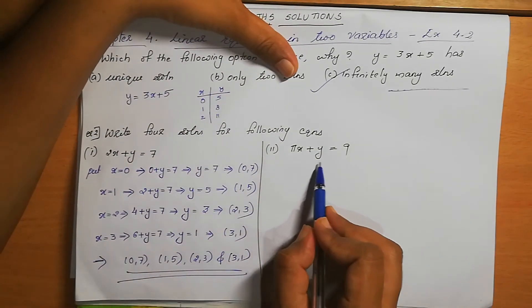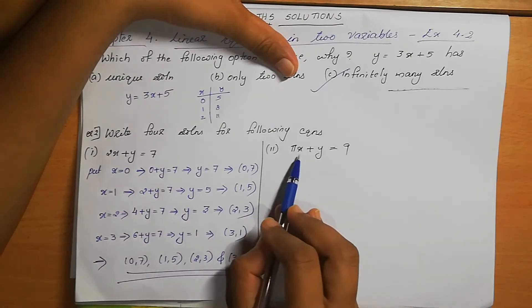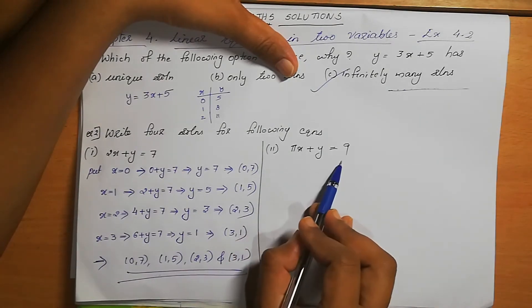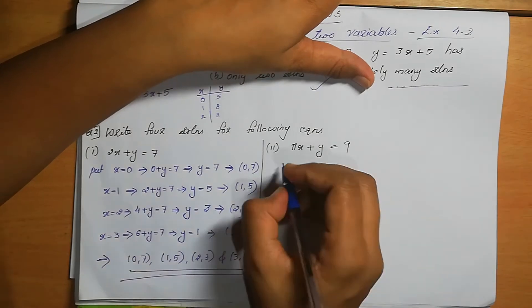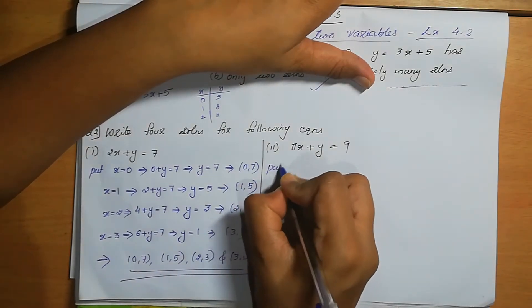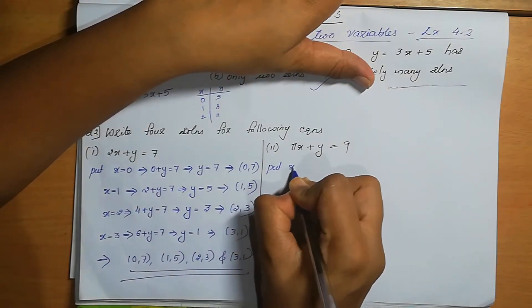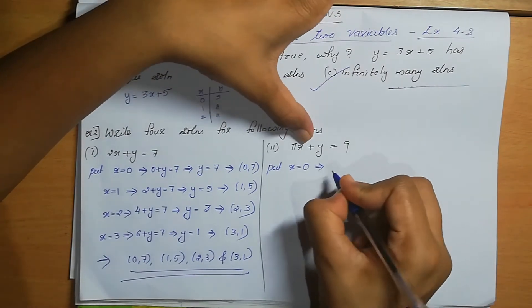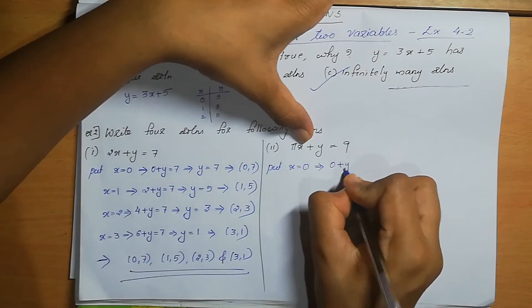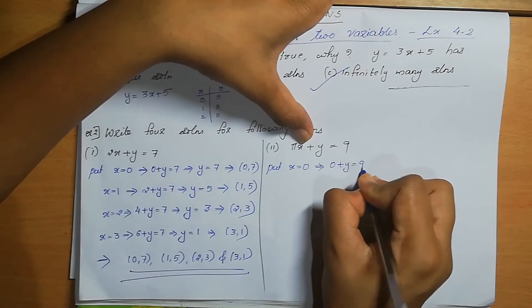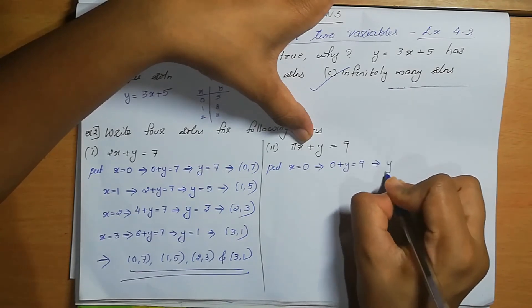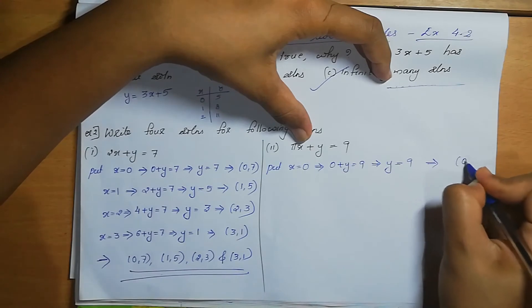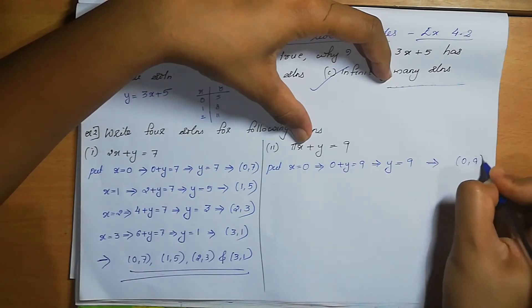Second equation: πx + y = 9. Here also we substitute values for x to get the value of y — that gives the solution of this equation. Put x=0: π×0 + y = 9, so y = 9. The solution is (0, 9).